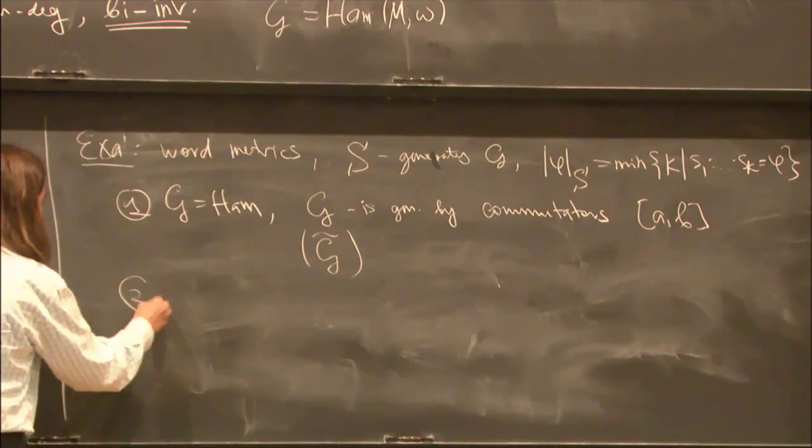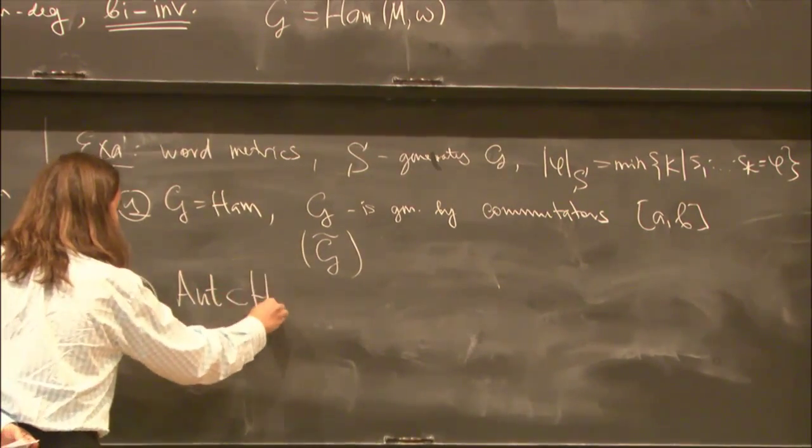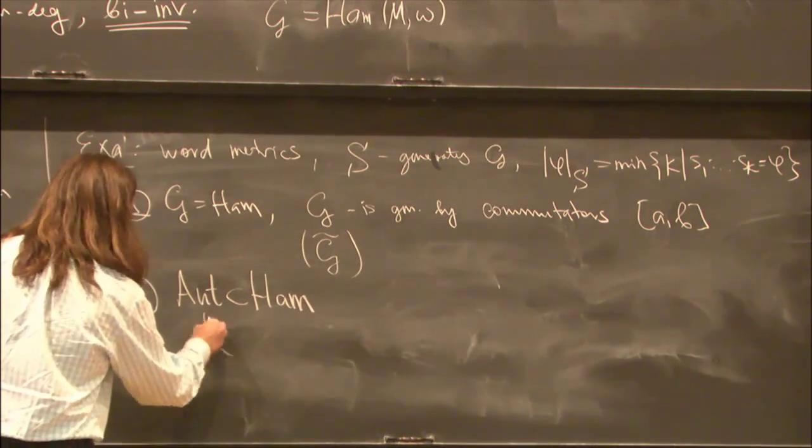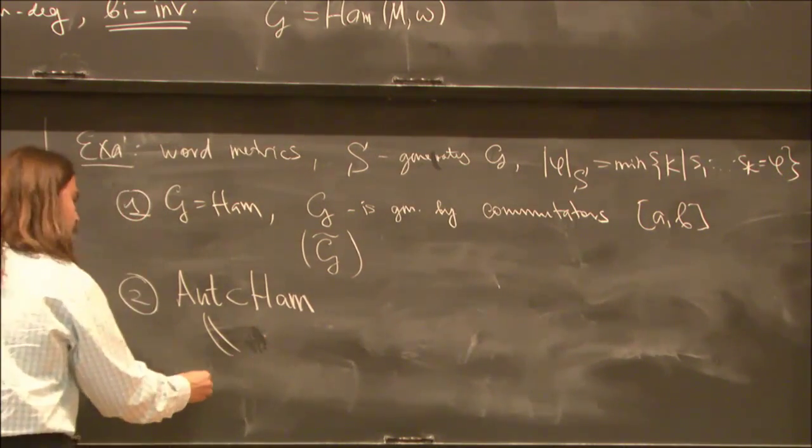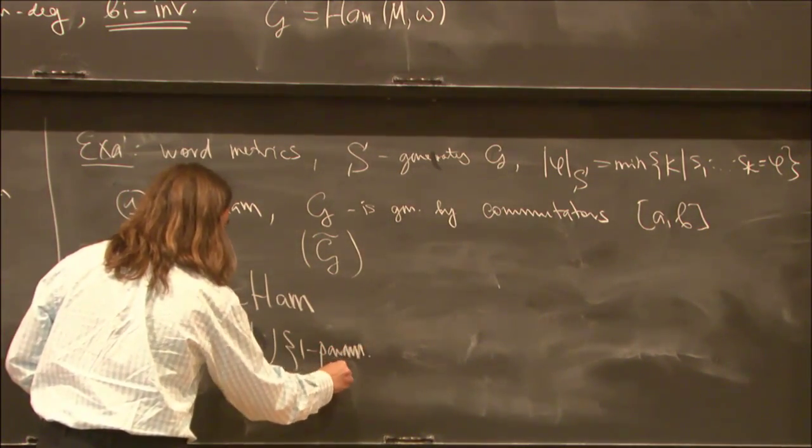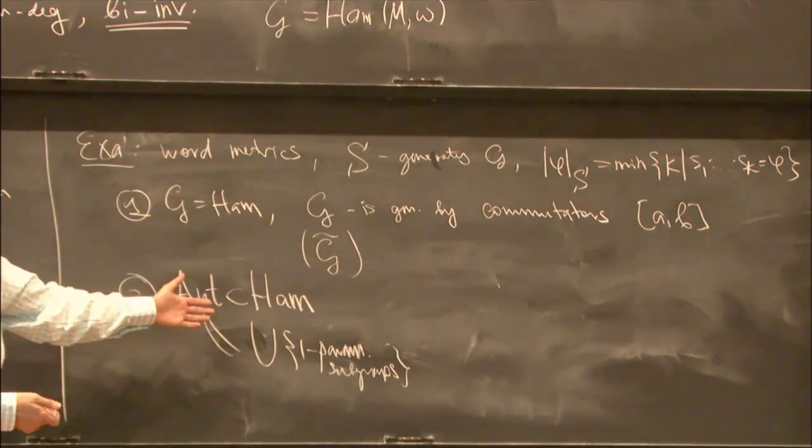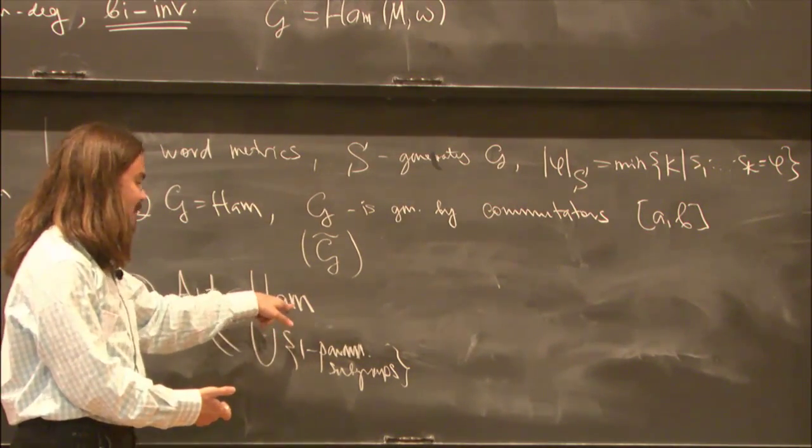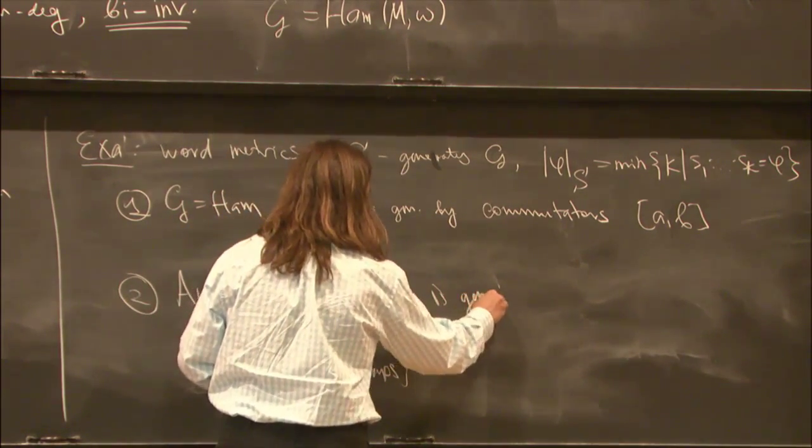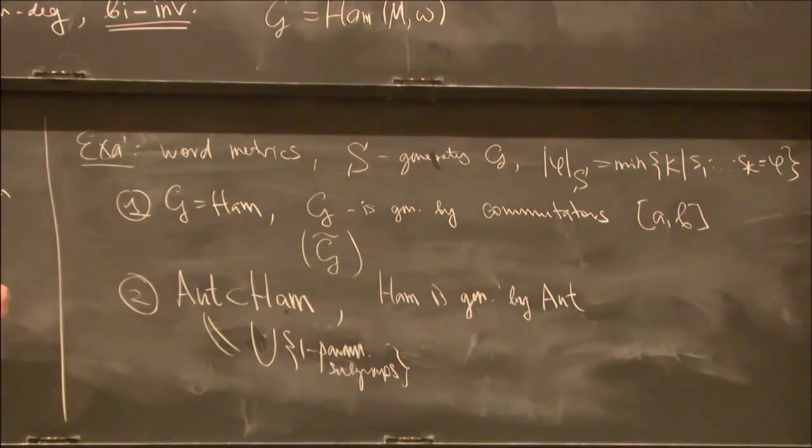The second example is the following. Note that Ham contains the image of its group exponential map. So this is the autonomous diffeomorphisms. It is the union of all one-parametric subgroups. And clearly, this is a non-empty subset. And Ham is simple. So Ham is generated by the autonomous. So one has the autonomous metric.